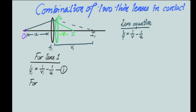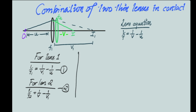Now let us look at how the lens equation will look for lens 2. For lens 2 it will be 1/f2 = 1/v minus 1/v1, where v1 is the image distance of the first lens. So the image distance of the first lens is being considered as the object distance for the second lens. We will call this equation 2.